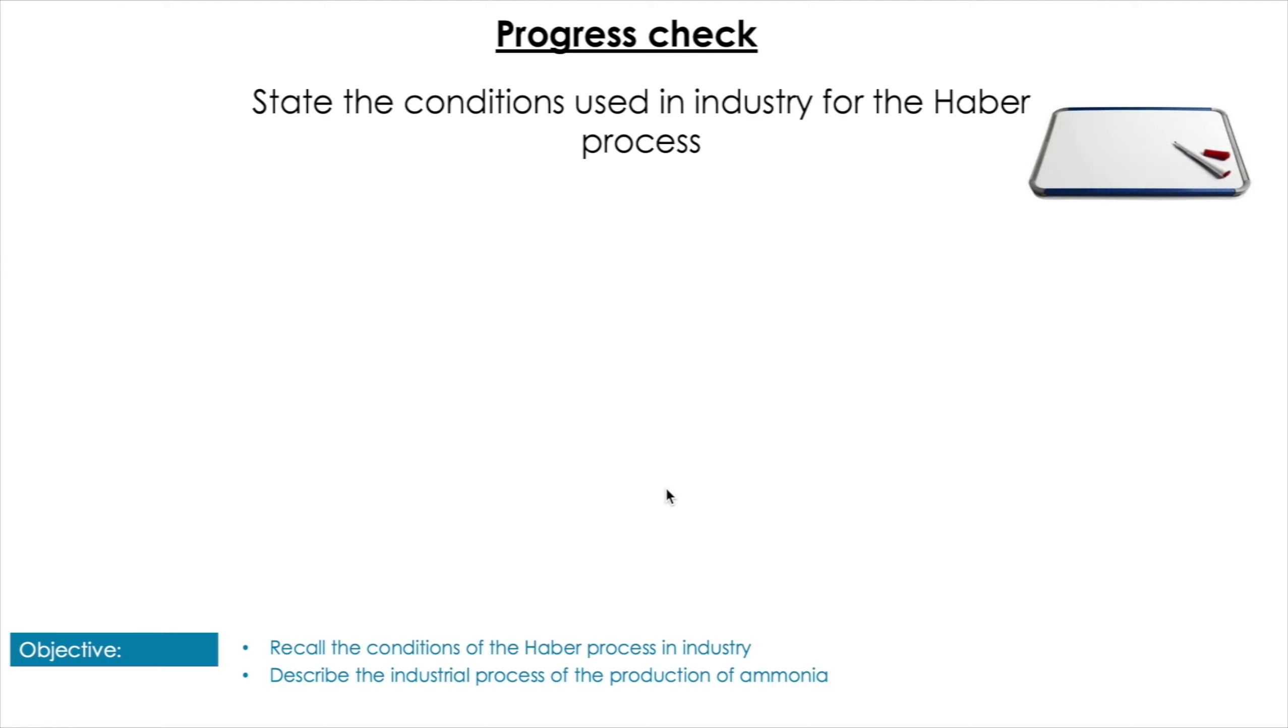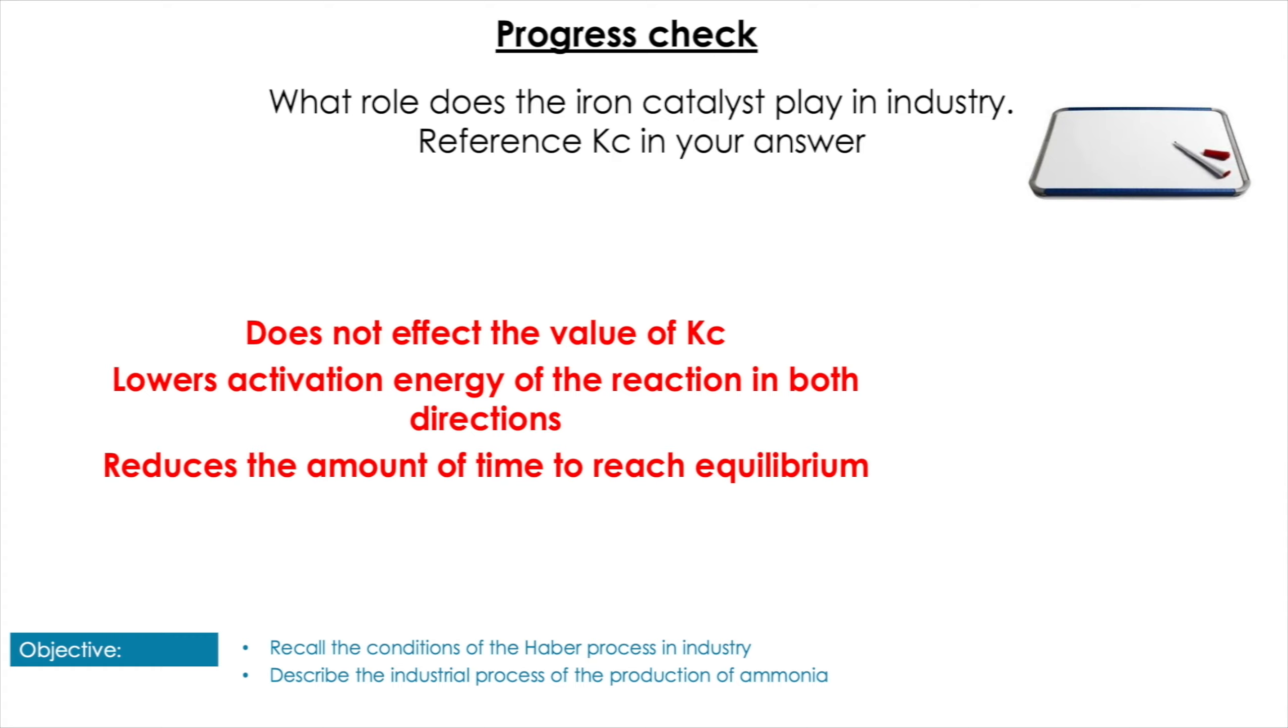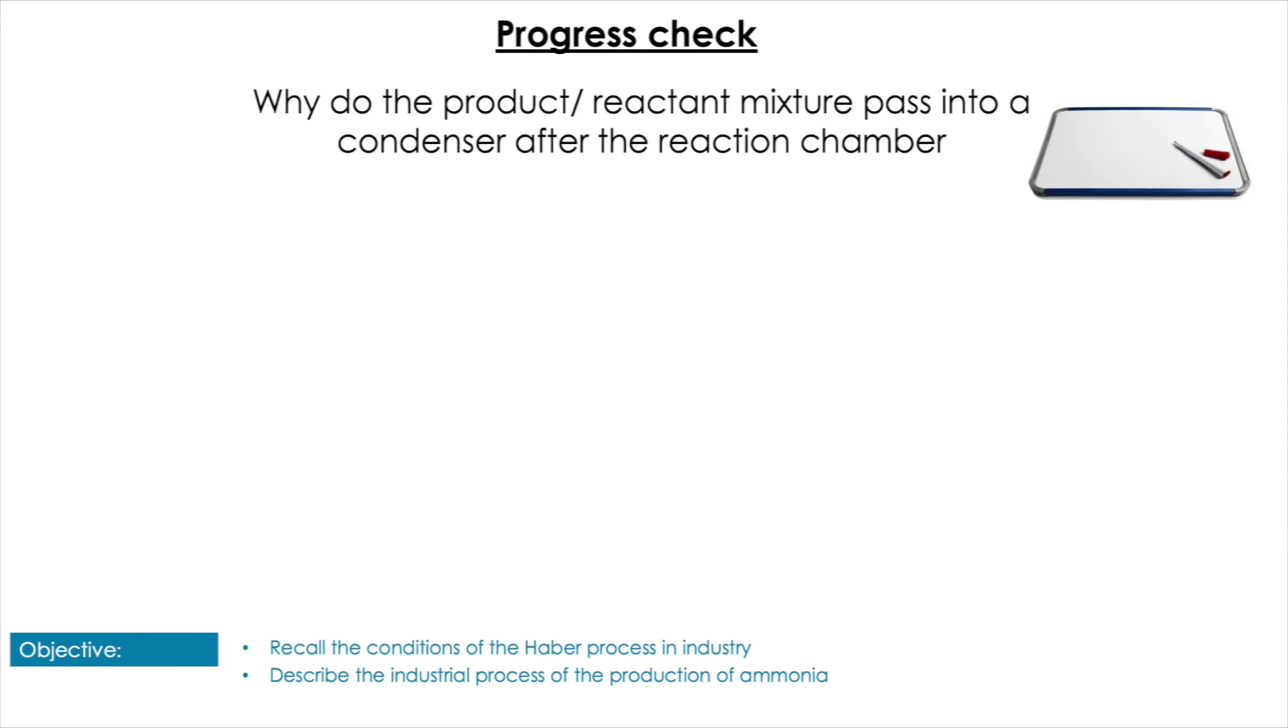Let's have a go at some questions then. State the conditions used in the Haber process. Pause the video to give yourself some time for that one, Pop Them Up. You should have got 450 degrees, 200 atmospheres, an iron catalyst, and the condensation of ammonia. Next question: what role does the iron catalyst play in industry? I want some reference to Kc in your answer. Pause the video here to give yourself some time to answer that. So here I was looking for you to mention that it doesn't affect the value of Kc, and it lowers the activation energy of the reaction in both directions. So it only changes the time it takes to reach equilibrium, not the equilibrium itself.